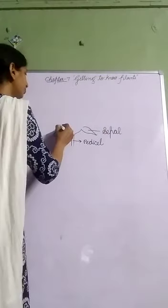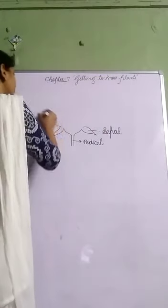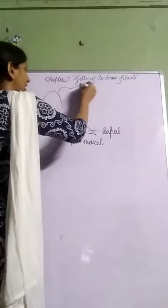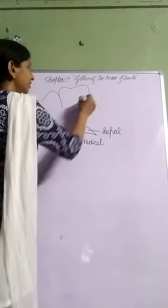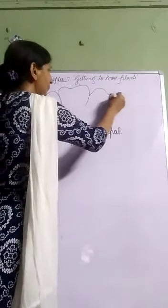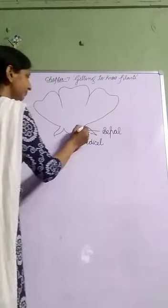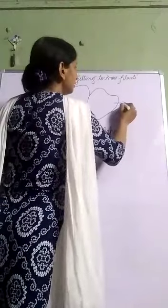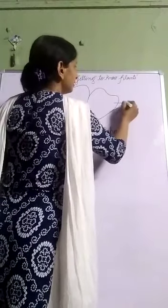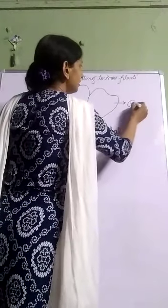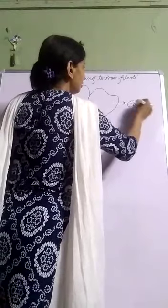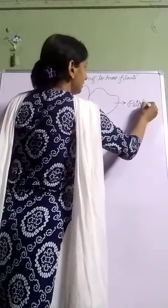Now, the most beautiful part of a flower are the colorful leaves, which we call petals. So the most beautiful and colorful leaves of a flower are called petals.